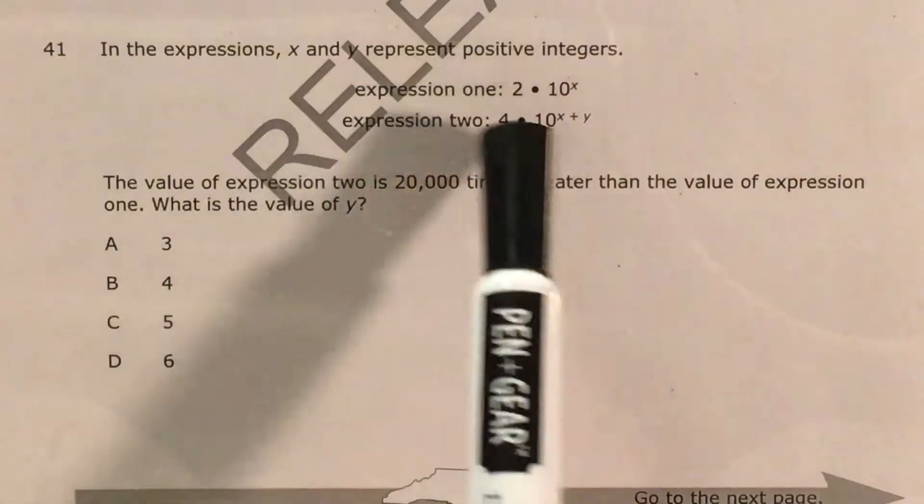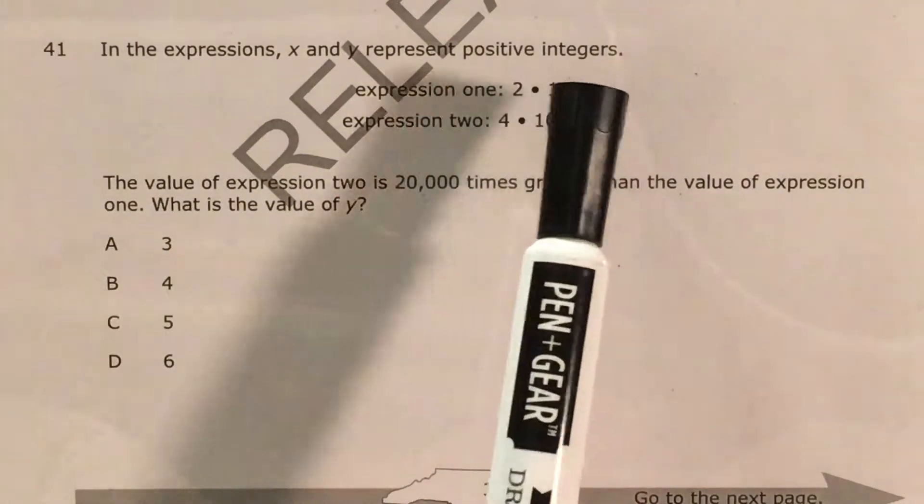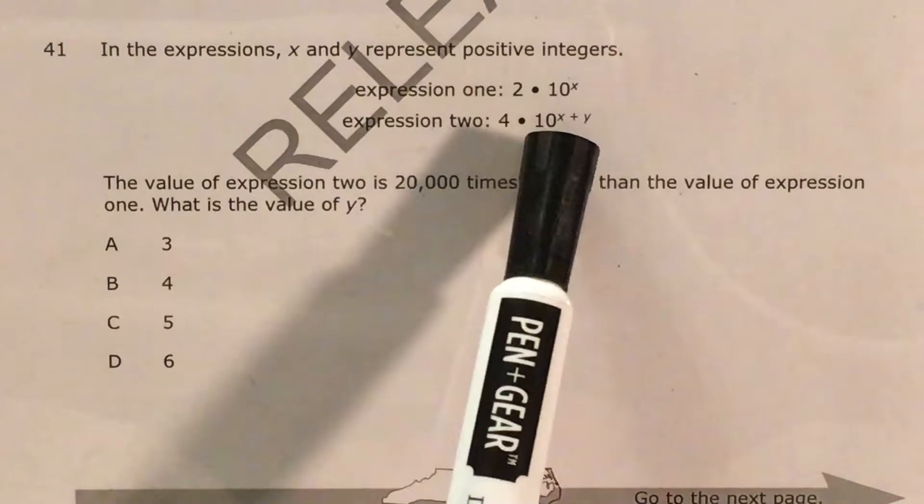We can see that in these expressions x and y represent positive integers. I know that seems like an unnecessary detail, but it actually makes the problem easier. Expression 1 is 2 times 10 to the x power. Expression 2 is 4 times 10 to the x plus y power, and it says the value of expression 2 is 20,000 times greater than the value of expression 1, and we're trying to figure out the value of this exponent y that's being added to x to make up the exponent that's attached to 10 in expression 2.